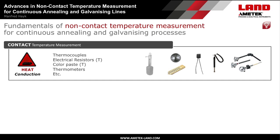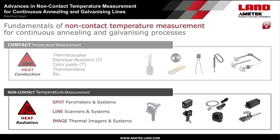With contact measurement, you need to touch the material or surface of the object whose temperature should be measured. As shown in the slide, with spot pyrometers, line scanners, and thermal imagers, the temperatures are measured non-contact. The non-contact temperature measurement is based on detecting the emitted heat radiation — infrared radiation — from the object to be measured. A main part of this heat radiation is emitted in the infrared spectrum, therefore it is called infrared non-contact temperature measurement. It is an optical temperature measurement method.